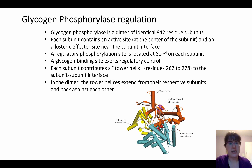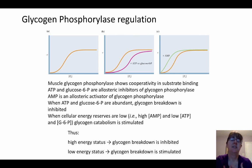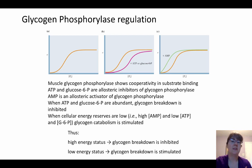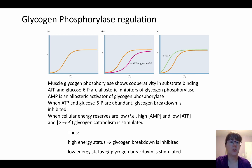The tower helix goes between the two subunits to reach out to the other half of the dimer. Since glycogen phosphorylase is breaking down glycogen, it's releasing phosphorylated glucose into the cell. Because of that, whenever you have high energy, glycogen breakdown is going to be inhibited overall, and that should also inhibit glycogen phosphorylase. Whenever we have low energy, this should stimulate glycogen breakdown.